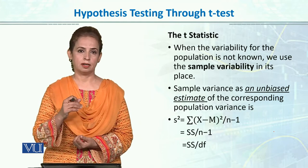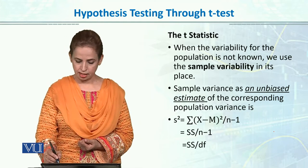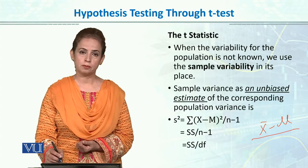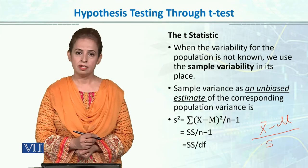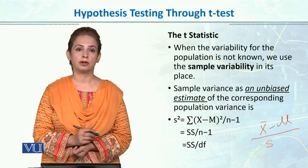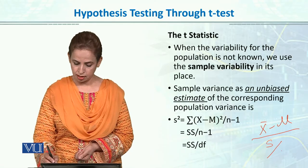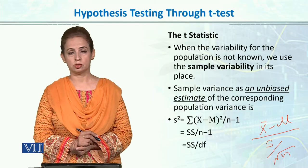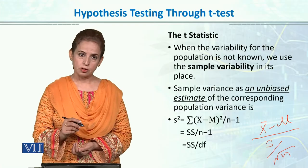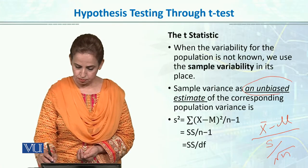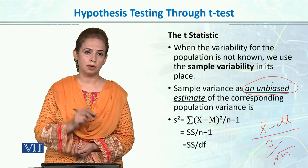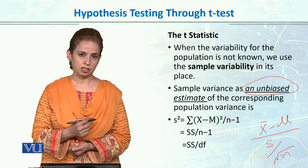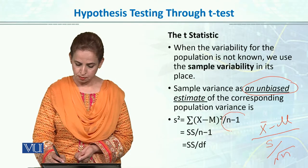T-Statistics کے اندر ہم بالکل اسی طرح mean minus mu والا formula use کرتے ہیں لیکن اب جب ہم standard error سے اس کو divide کرتے ہیں تو ہمیں sigma کی جگہ standard deviation of the sample use کرنی ہوتی ہے۔ ہمیں population کا sigma known نہیں ہوتا تو ہم sample کی standard deviation سے اس کو replace کرتے ہیں۔ جب ہم sample کی standard deviation use کرتے ہیں تو we usually go with unbiased estimation — sample کی standard deviation کو population کی standard deviation کی جگہ use کرنے کے لیے ہم n minus 1 کا concept use کرتے ہیں۔